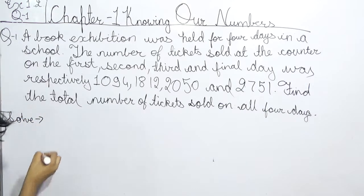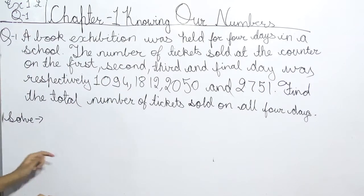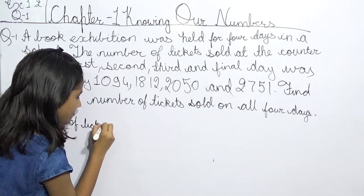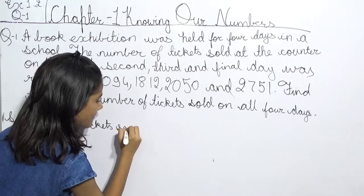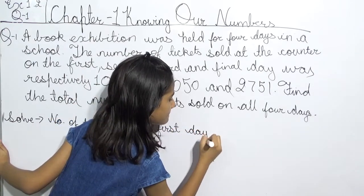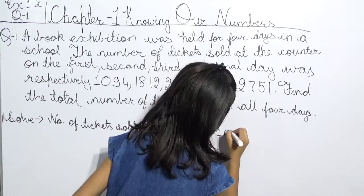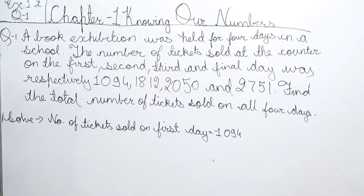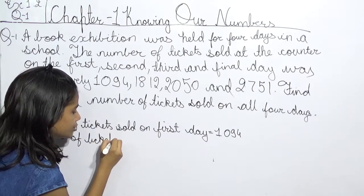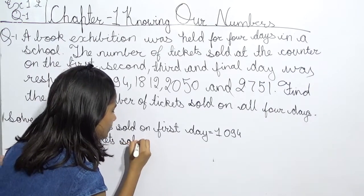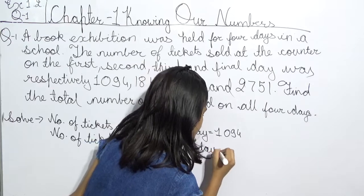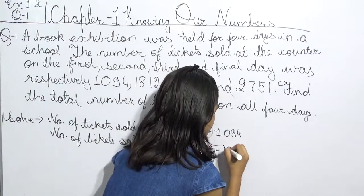How do we solve? First, the number of tickets sold on the first day, which was 1094. Then, the number of tickets sold on the second day, which was 1812.